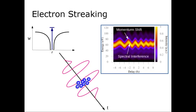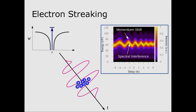This information is recorded through both the momentum shift of the electrons as well as their spectral interference. In this paper, we demonstrate an improved technique for retrieving this information.